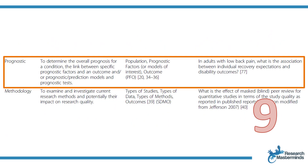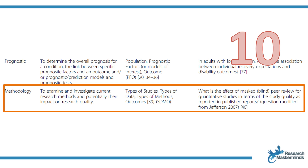Another type is the prognostic systematic review, which determines the overall prognosis for a condition, the link between specific prognostic factors and an outcome, and/or prognostic prediction models. An example: in adults with low back pain, what is the association between individual recovery expectations and disability outcomes? Lastly, the methodology systematic review aims to examine and investigate current research methods and potentially their impact on research quality. For example: what is the effect of masked or blind peer review for quantitative studies in terms of study quality as reported in published reports?